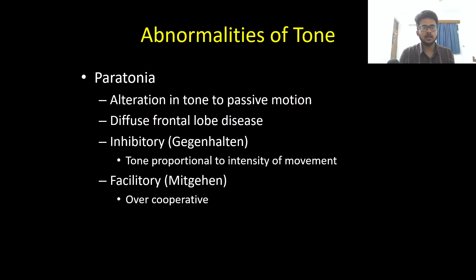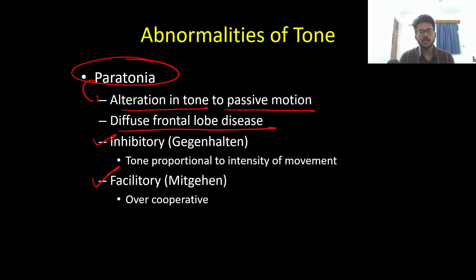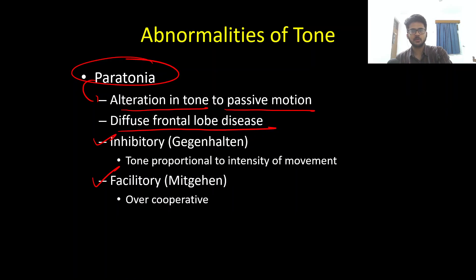Paratonia is because of diffuse frontal lobe disease and is defined as an alteration in muscle tone in response to passive motion. It can be inhibitory or facilitatory. Inhibitory paratonia — also known as gegenhalten — means tone is proportional to the intensity of movement: more intensity causes more tone, less intensity causes less tone. Facilitatory paratonia — mitgehen — is when the patient is over-cooperative and allows you to move the joint very easily. These are the two important types of paratonia, and this concludes the examination of muscle tone in the clinical neurology series.